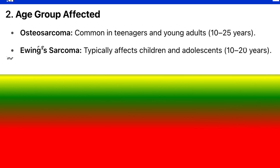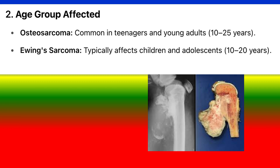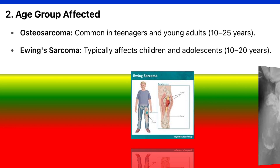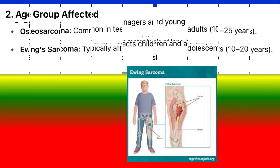2. Age group affected. Osteosarcoma: common in teenagers and young adults, 10 to 25 years. Ewing's sarcoma: typically affects children and adolescents, 10 to 20 years.